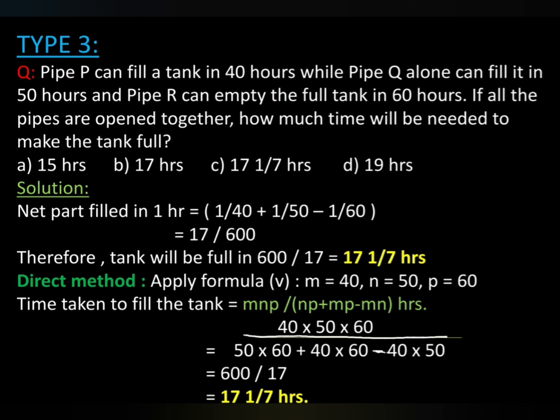Net part filled in 1 hour equals 1 by 40 plus 1 by 50 minus 1 by 60, equals 17 by 600. Therefore, tank will be filled in 600 by 17, equals 17 and 1 by 7 hours.